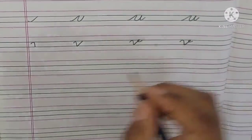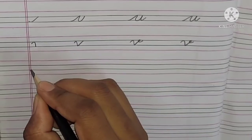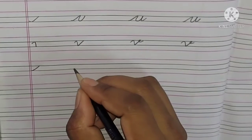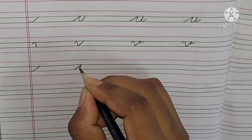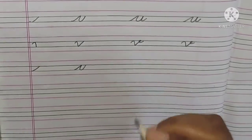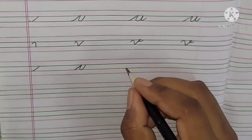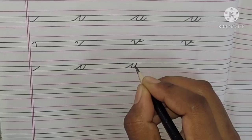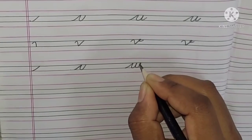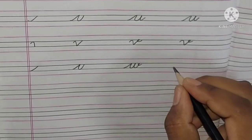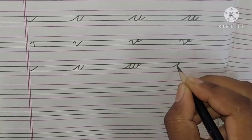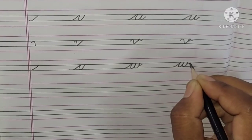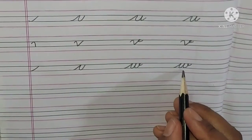After V, what comes? W. For W, go from the third line to the second line. Again, third line to the second line, then curve once. Without lifting the pencil, go from the third line to the second line, make a round curve, then one more curve like this. Once again — third line to second line, curve, then one more curve. This is your small letter W.